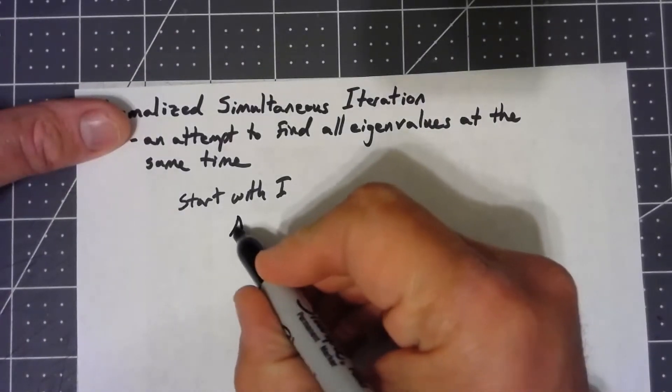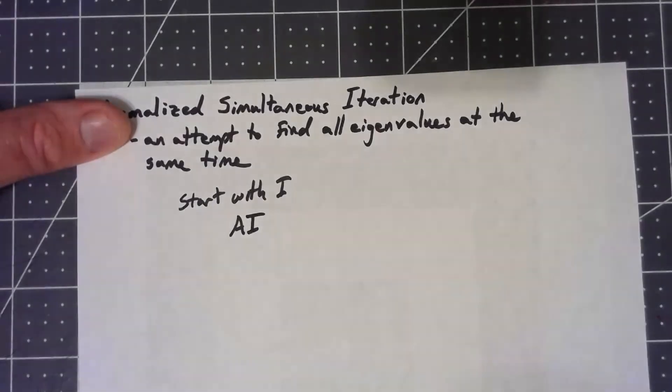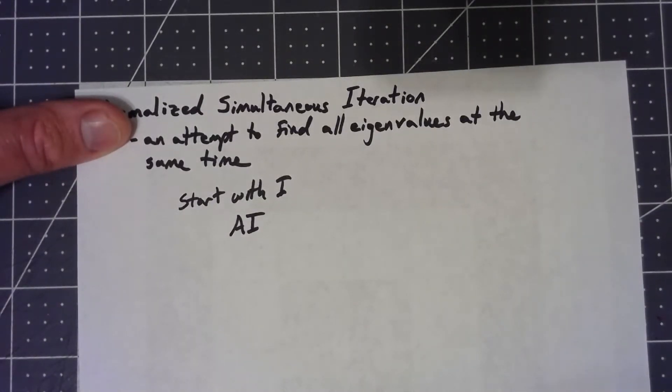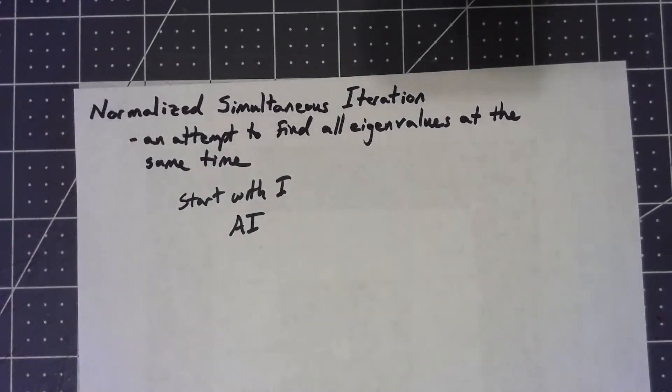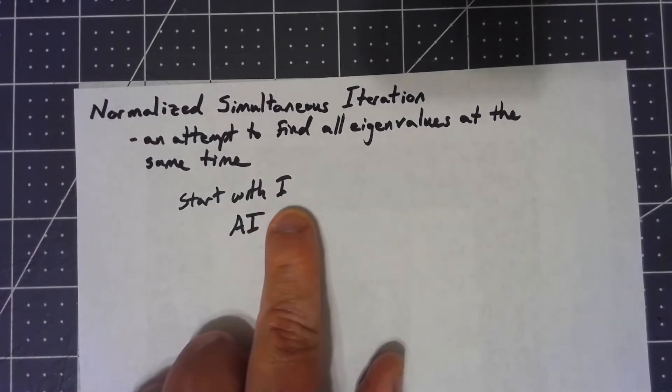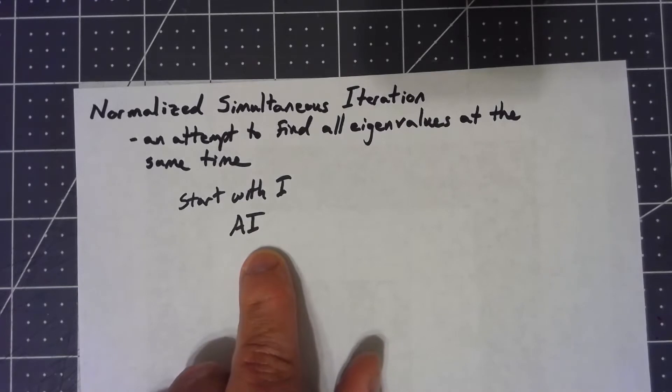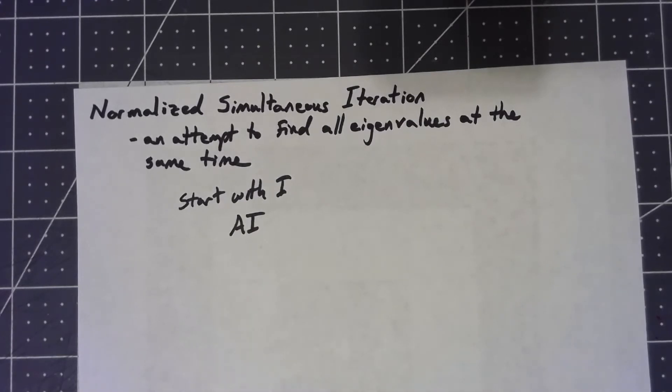But I'm still going to start the same way. I'm going to say AI is my first thing. Now, by doing this, it's important to realize that I has orthonormal columns. AI doesn't though. The whole shifting by A ruins the orthogonality there.